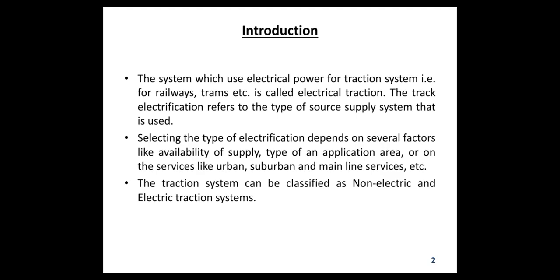Next is the literature survey. Electrical power is taken from the grid supply at 220 kV or 132 kV and then stepped down to 25 kV single phase at the traction substation through a step-down transformer and suitable switchgear. The electrical power at 25 kV AC is then transmitted to the feeding line through a feeder.